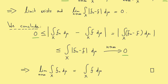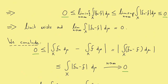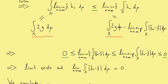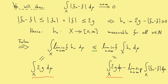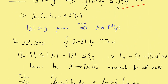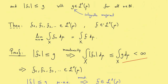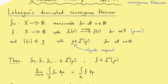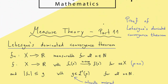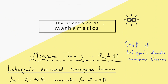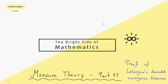And that was the proof of Lebesgue's dominated convergence theorem. The word 'dominated' refers to the important ingredient: we need an integrable majorant g, and once we have it we can apply the theorem. If you want to see some applications, please let me know, because that could be a very good idea for the next part in this series. Thank you very much and see you next time. Bye.